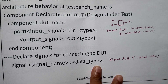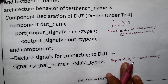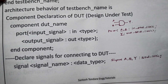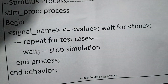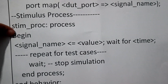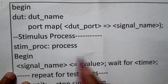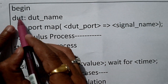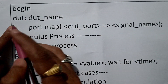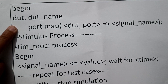Since the signals are of standard logic type, they can be either 0 or 1. After defining the signals, we write 'begin' to start the initialization section of the architecture.